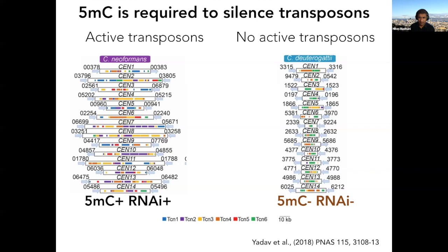In the sister species Cryptococcus deuterogattii, all the transposable elements have degenerated — probably because good gene silencing mechanisms cause transposons to degenerate over time. As a result, this organism has smaller centromeres and no active transposons. Remarkably, this lineage has also lost both 5-methylcytosine and RNAi: the RNAi machinery is mutated, there are no small RNAs, and DNMT5 is mutated and nonfunctional.